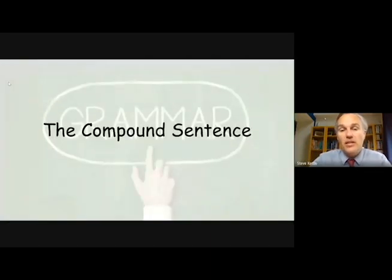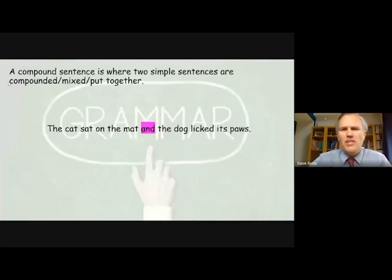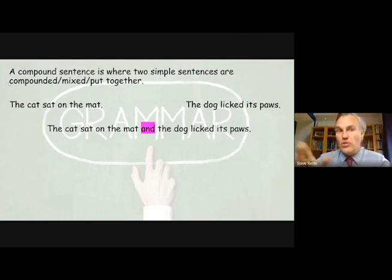The second one we're going to look at is the compound sentence. Now compound sentences are where you have two simple sentences and they are compounded and put together to make a longer, more interesting sentence. I've introduced the dog into the mix now, so the cat sat on the mat and the dog licked its paws. Two simple sentences, one about the cat, one about the dog, and we've compounded them together with a connective or conjunction which is 'and' in this case.